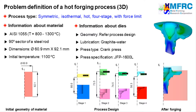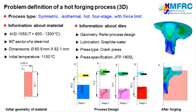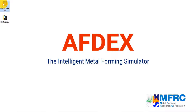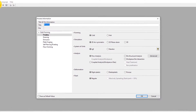The result of this simulation would be a forged component as can be seen on the right side. Now let's see how we can simulate this process using Ofdex. Double-click on the Ofdex icon to execute Ofdex on your computer. Click on New to define a new process.